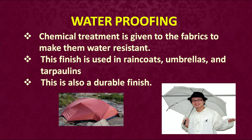Another finish that gives fabric a special character is waterproofing. Chemical treatment is given to fabrics to make them water resistant so that water does not pass through, and you can use them for special purposes. This fabric can be used to make raincoats, umbrellas and repellents. It is also a durable finish.